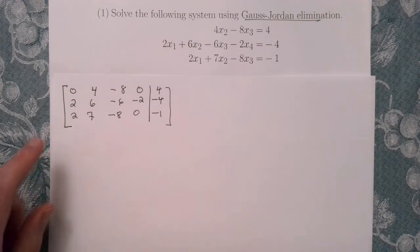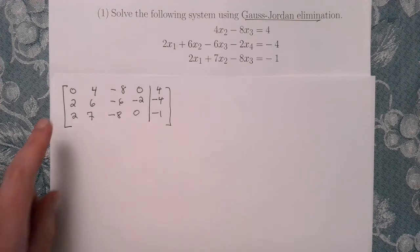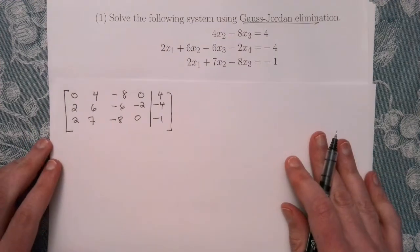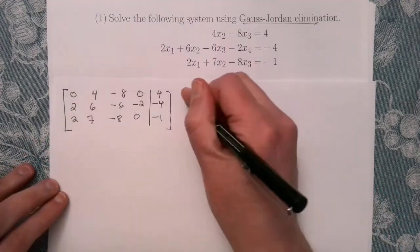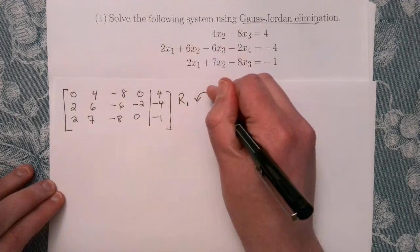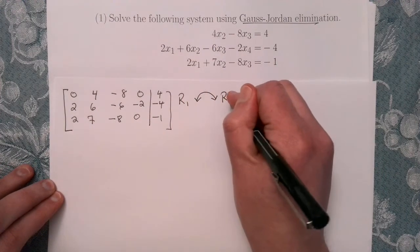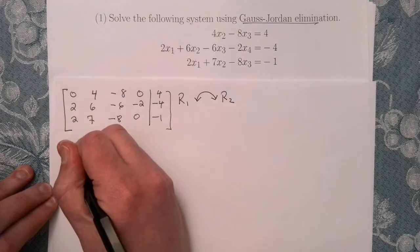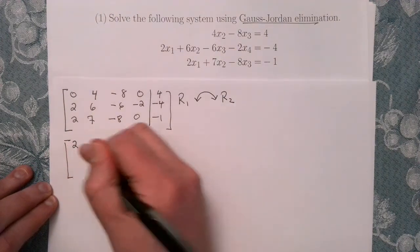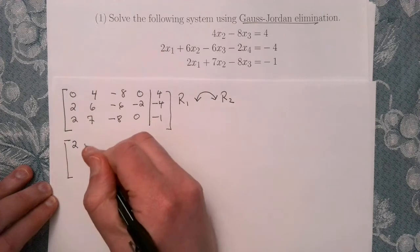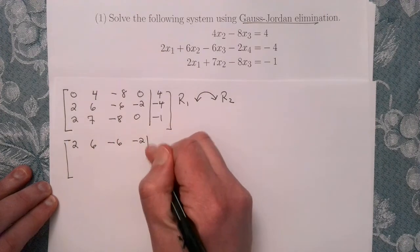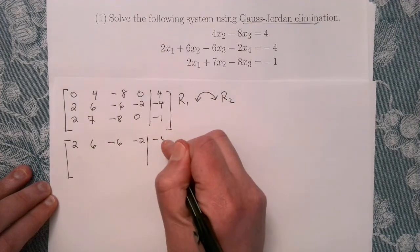The first thing I would like is a pivot here, so let's swap the first two rows. We're going to take row one and interchange it with row two. That gives me a chance of having a leading one there. So that's going to give me 2, 6, minus 6, minus 2, minus 4.